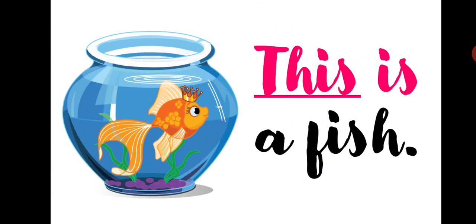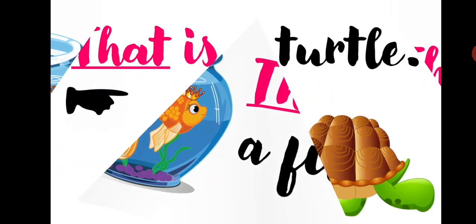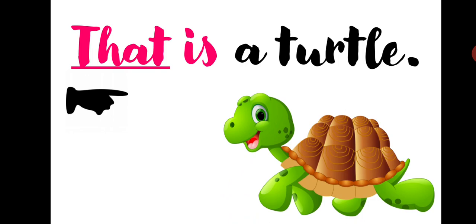Fourth friend is this. This is a fish. Is is also used with this. Now fifth friend is that. That is a turtle. Is is also used with that.